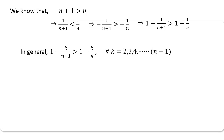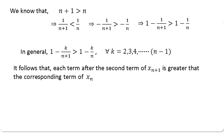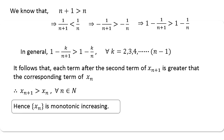For any k like 2, 3, 4 up to n−1, you can analyze this. By observing the above results, we have seen each term after the second term of xn+1 is greater than the corresponding term of xn. Therefore, xn+1 > xn for all n ∈ ℕ. Hence, the sequence xn is monotonic increasing.